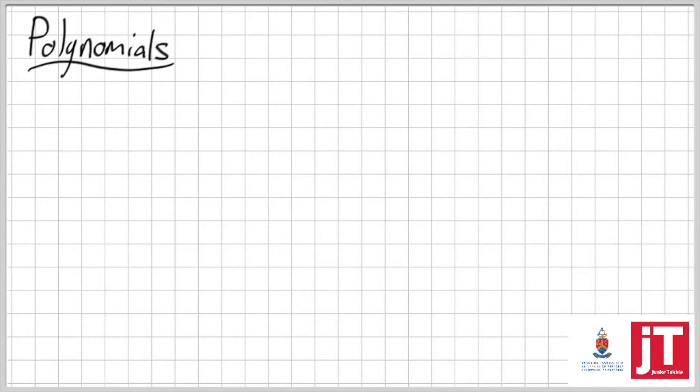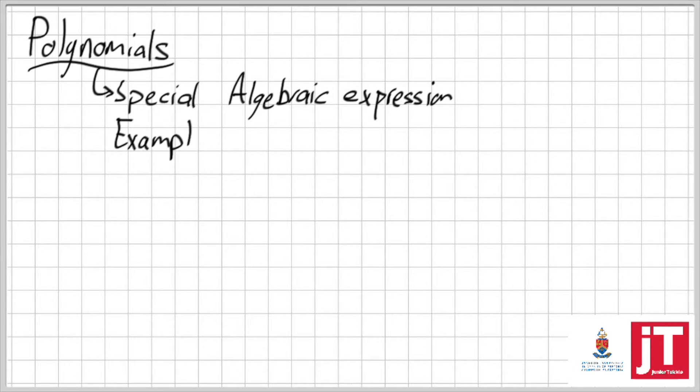Well, let's quickly look at your basics. A polynomial is a special type of algebraic expression. In other words, it is something like x squared minus 3x plus 4, I mean.